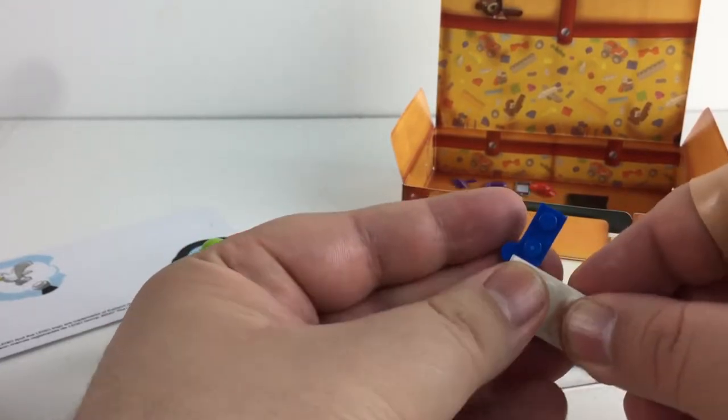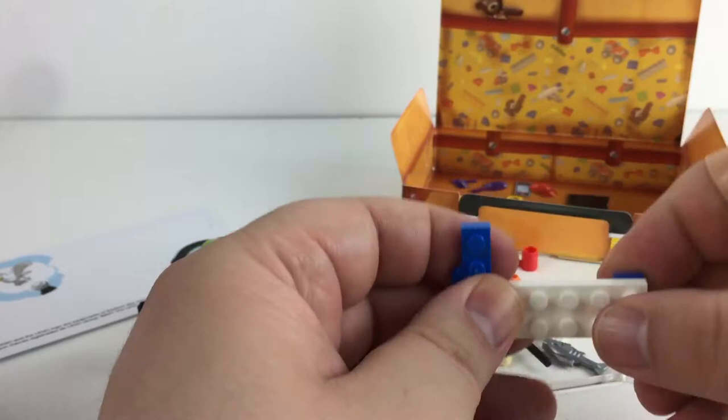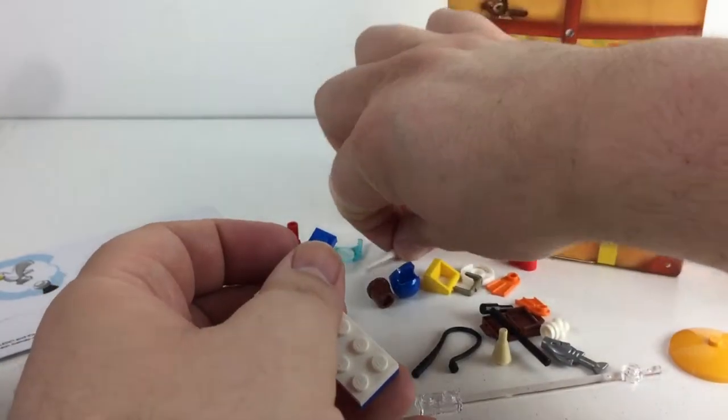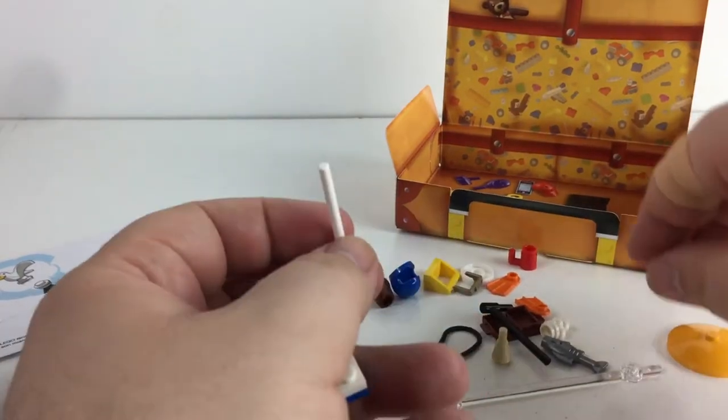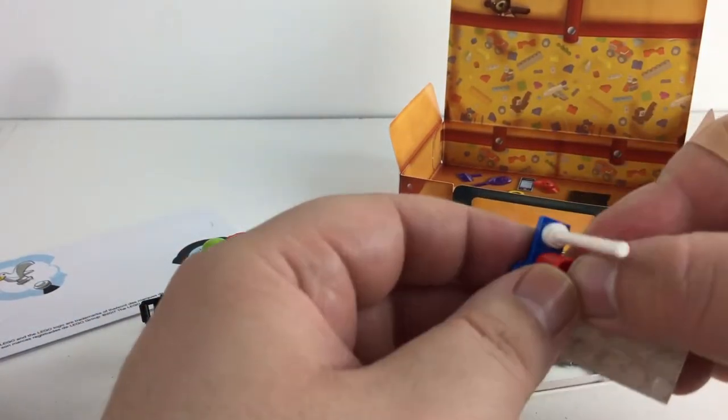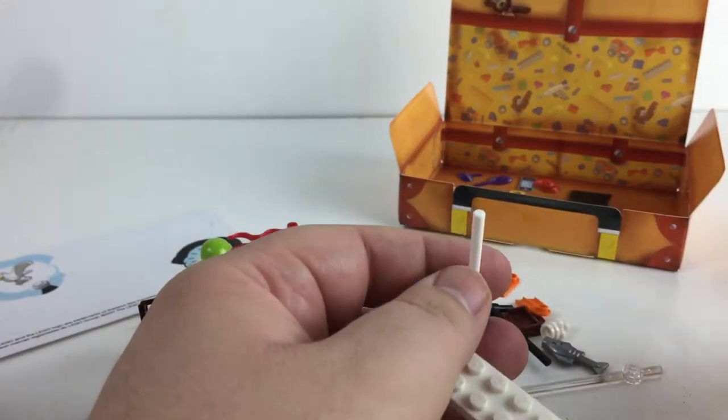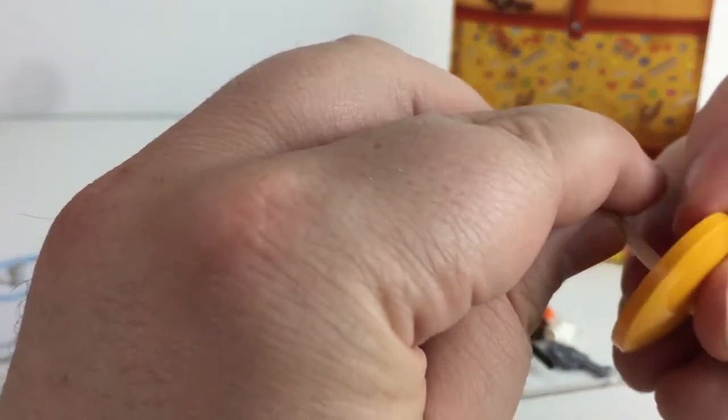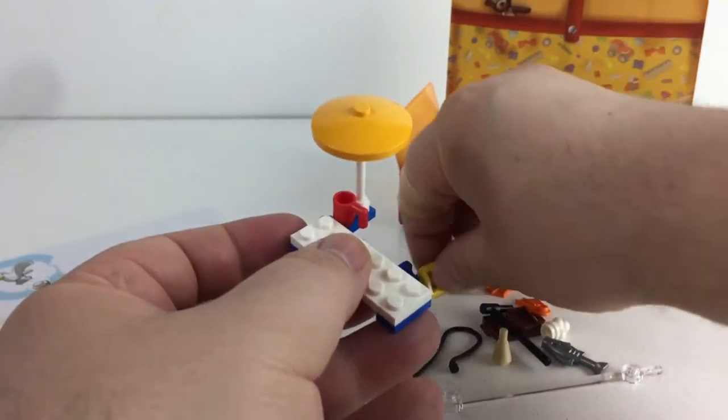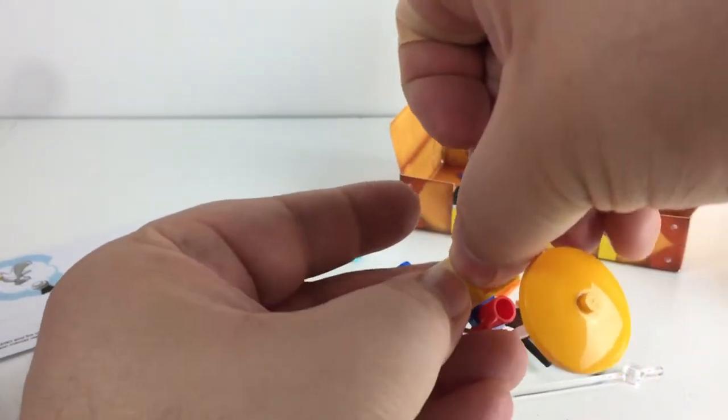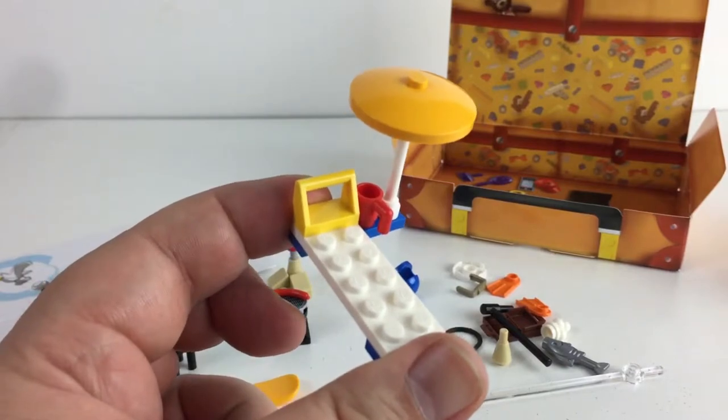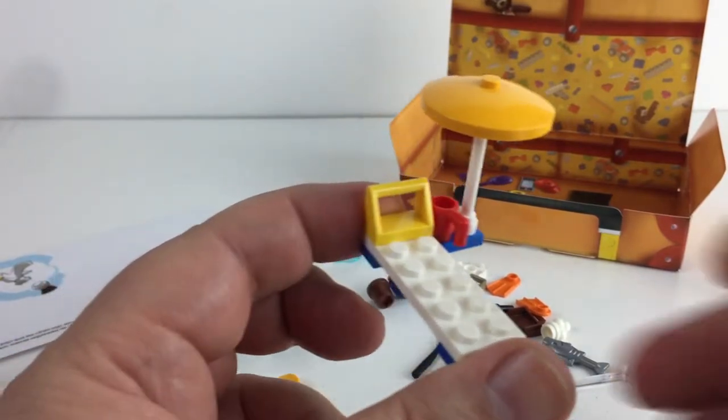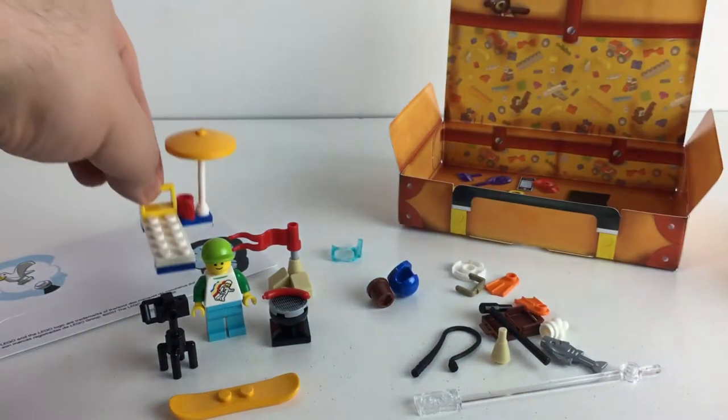There is a post for the umbrella and a little coffee mug, and then the back of the chair. Cool, he's got his own little lounge for hanging out on the beach. So we'll set that over there with him.